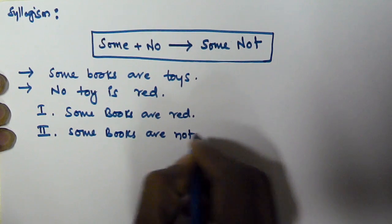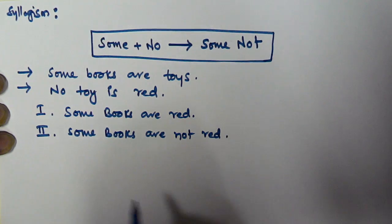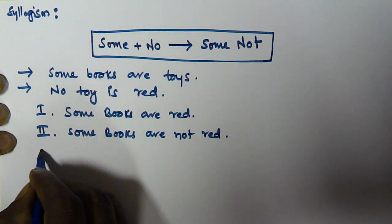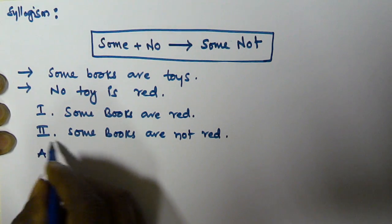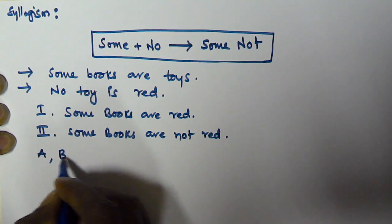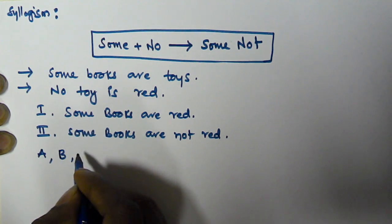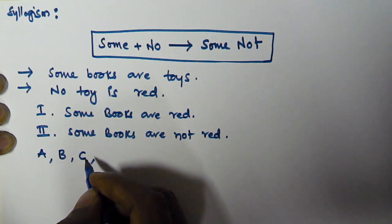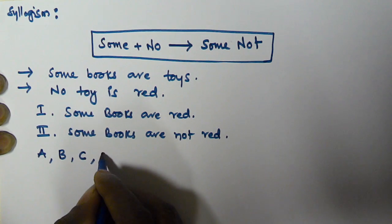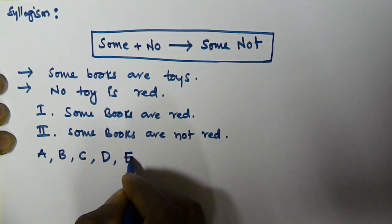If conclusion one alone is true, we select option A. If conclusion two alone is true, we select option B. If either one or two is true, we select option C. If neither conclusion one nor conclusion two is true, we select D. If both conclusions one and two are true, we select E.